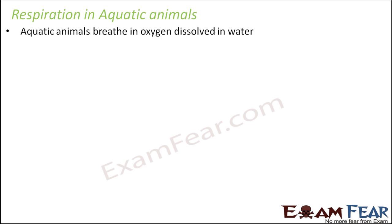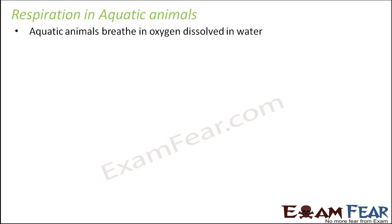If you talk about aquatic animals, for example fishes, how do they undergo respiration? In case of human beings, we being terrestrial, we breathe in oxygen from the air. Air has a lot of oxygen and we take in oxygen through our nostrils and that goes into the lungs. But in case of aquatic animals, they breathe in oxygen which is dissolved in water. Water is H2O and also has oxygen dissolved in it, so aquatic animals take in water and absorb the oxygen dissolved in it.